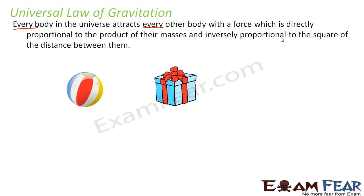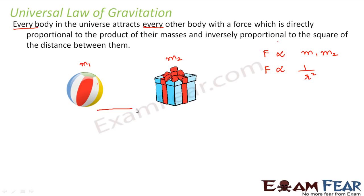The force with which two objects attract each other is directly proportional to the product of their masses — if the mass of the ball is m1 and the mass of the box is m2, then F ∝ m1·m2. This force is also inversely proportional to the distance R between them. The farther apart the objects are, the lesser the force; the closer they are, the higher the force.